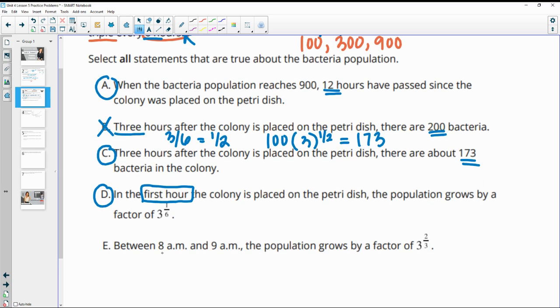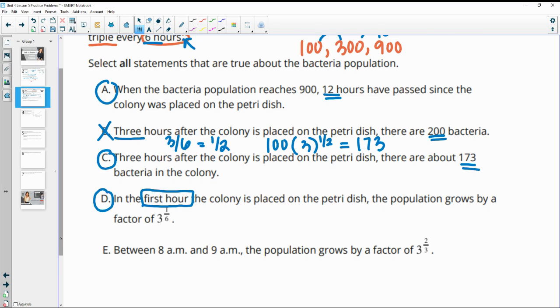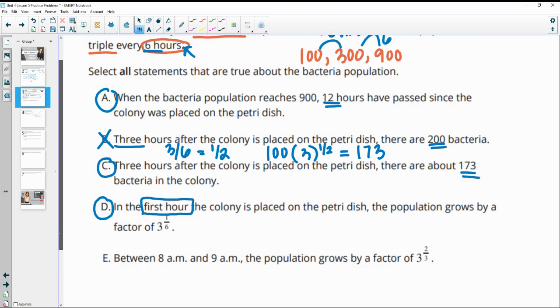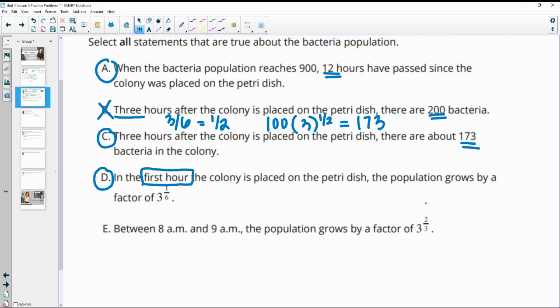And then E says between 8 and 9 a.m., the population grows by a factor of two thirds. So this one is trying to trick you that it started at 7 a.m.